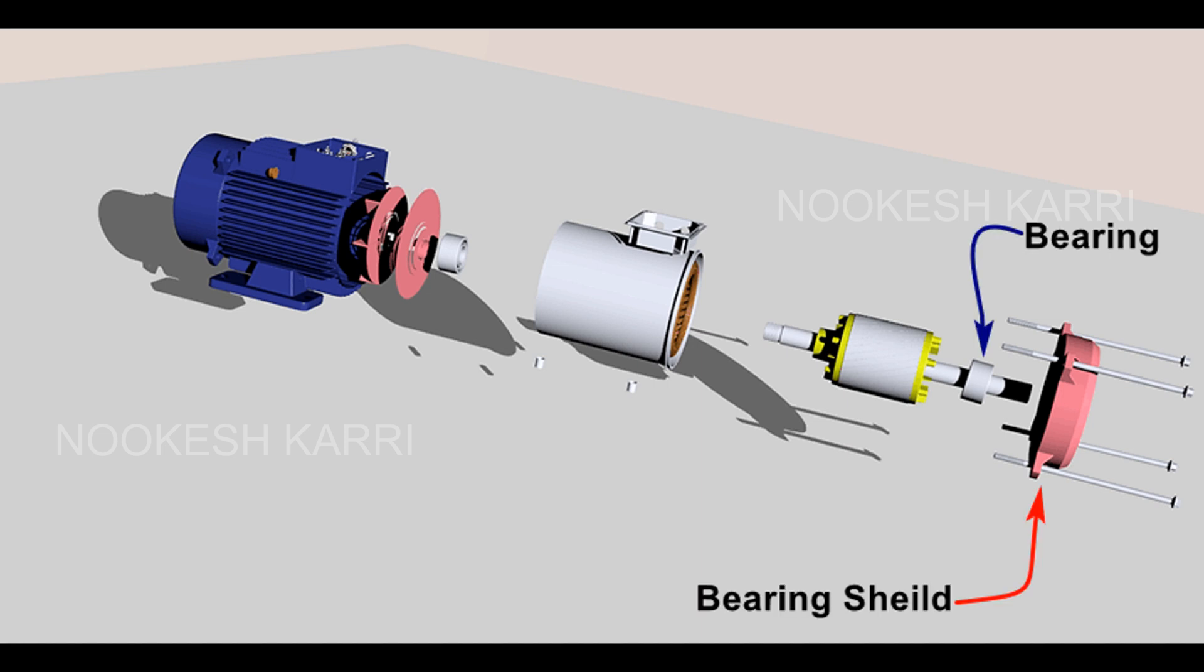The shaft of the induction motor is supported on two bearings at each end to ensure free rotation within the stator and to reduce friction. The rotor is the rotating part of a motor. It contains a cylindrical core. The rotor core is made in lamination to reduce eddy currents.